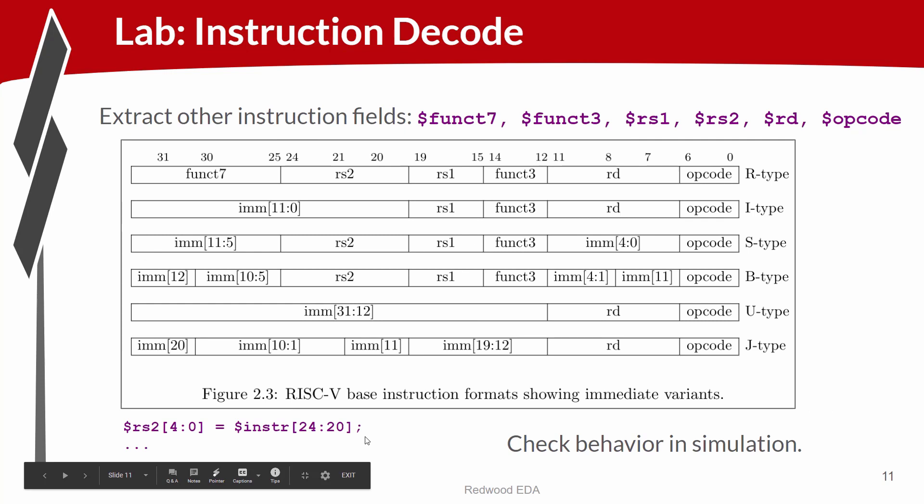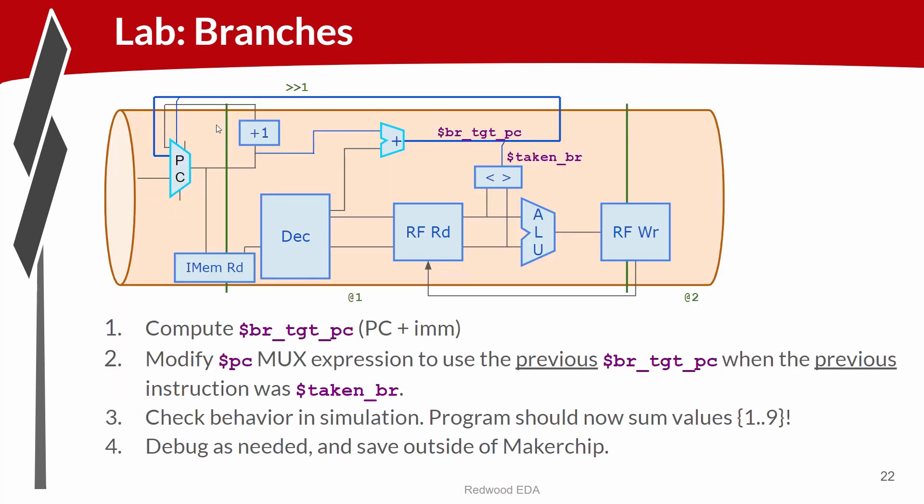You'll notice here that RISC-V is defined such that each of the fields in the instruction is always coming from the same place regardless of the instruction type. You'll modify the PC mux here to take this branch target as an input.